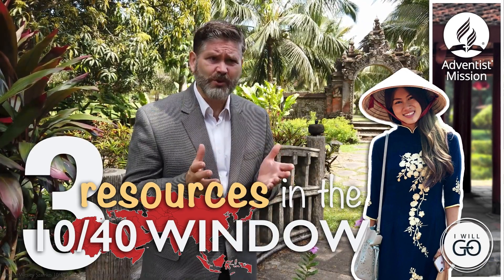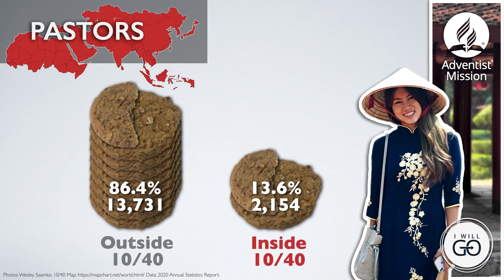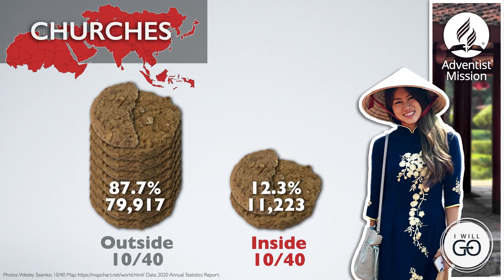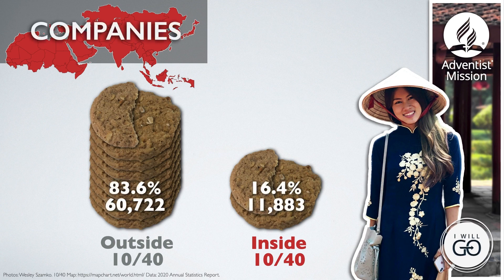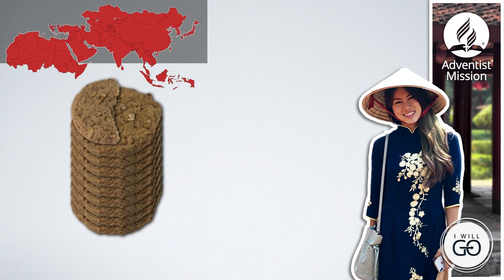Third, mission to the 1040 Window lacks resources. Many of us enjoy a good cookie. If I had the choice to snack on cookies over onions, the cookies would win every time. But does that mean I should keep all the cookies for myself? Let's use cookies to represent the church's resources. More than eight and a half out of ten ordained Adventist pastors serve outside the 1040 Window — that's less than one and a half cookies for the 1040 Window. The numbers are almost the same for Adventist churches and only slightly better for companies. Most startling: over 9.6 out of 10 of the world's Adventist institutions are serving the most reached parts of the world. What happens if you eat too many cookies?